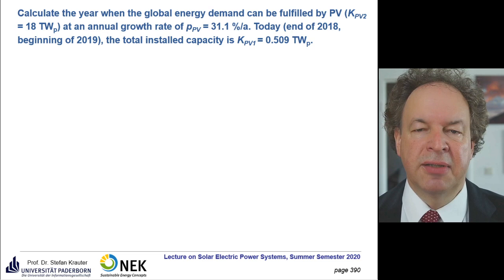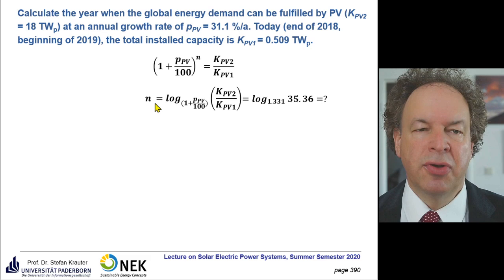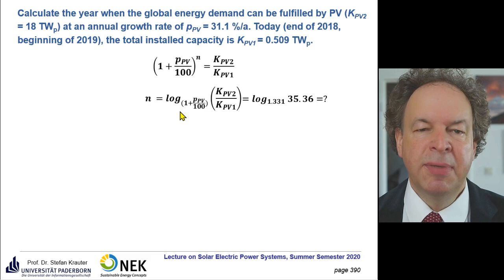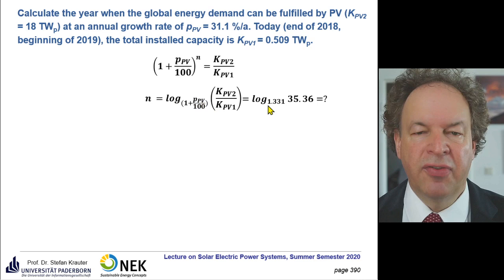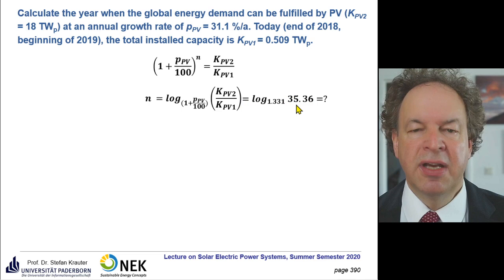At the end of 2019 / beginning of 2019, the total installed capacity is half a terawatt. We apply that formula and want to know how many years from the end of 2019. The growth rate is 31%, so the base of the logarithm is 1.331. The factor between the desired capacity and existing capacity is 35.36 — we need a 35.36-fold PV capacity in order to reach the desired 18 terawatts.